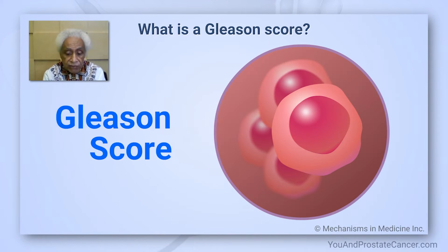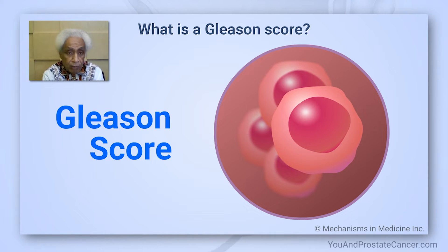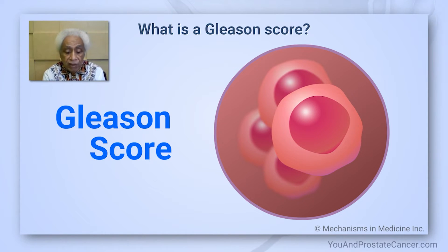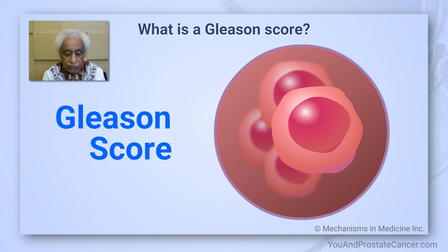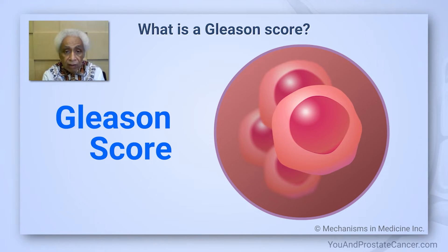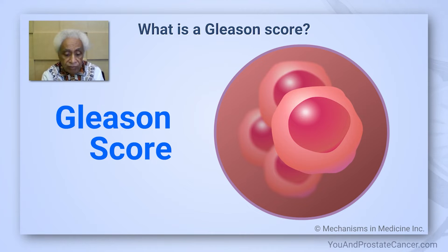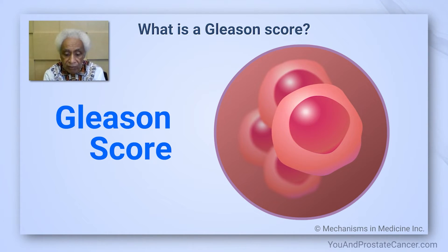Dr. Gleason noted that cancer cells tended to fall into five distinct patterns as they change from normal cells. The cells are graded on a scale of one to five. Grade one cells look like cancer because their growth patterns are abnormal — they're spreading into normal tissue, but they look much like normal prostate tissue. A grade five cell is high grade; it's changed so much it no longer even looks like a normal prostate cell.